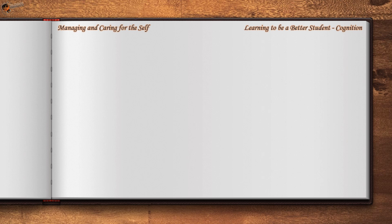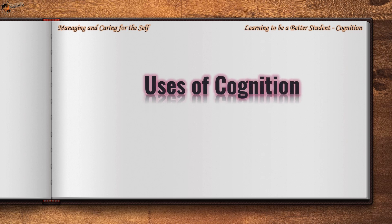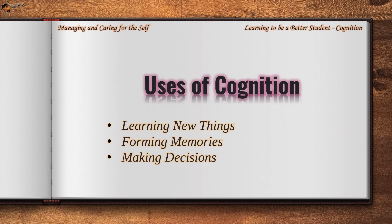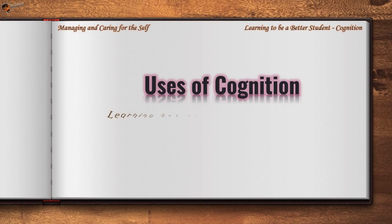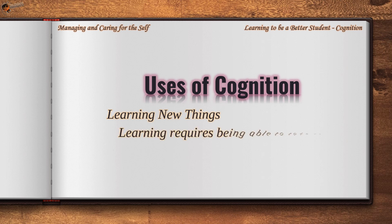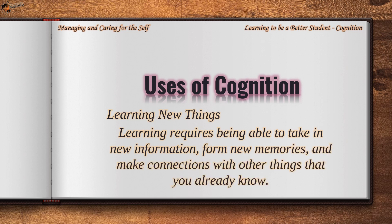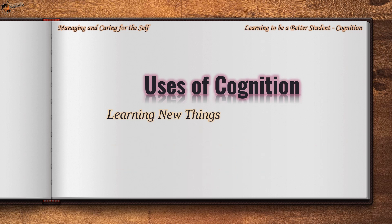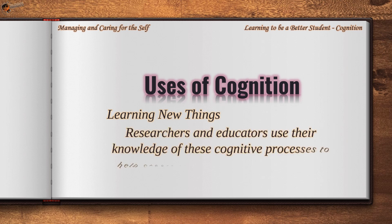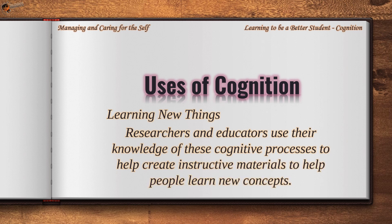Cognitive processes affect every aspect of life from school to work to relationships. Some specific uses for these cognitive processes include learning new things, forming memories, and making decisions. Learning requires being able to take in new information, form new memories, and make connections with other things that you already know. Researchers and educators use their knowledge of this cognitive process to help create instructive materials to help people learn new concepts.